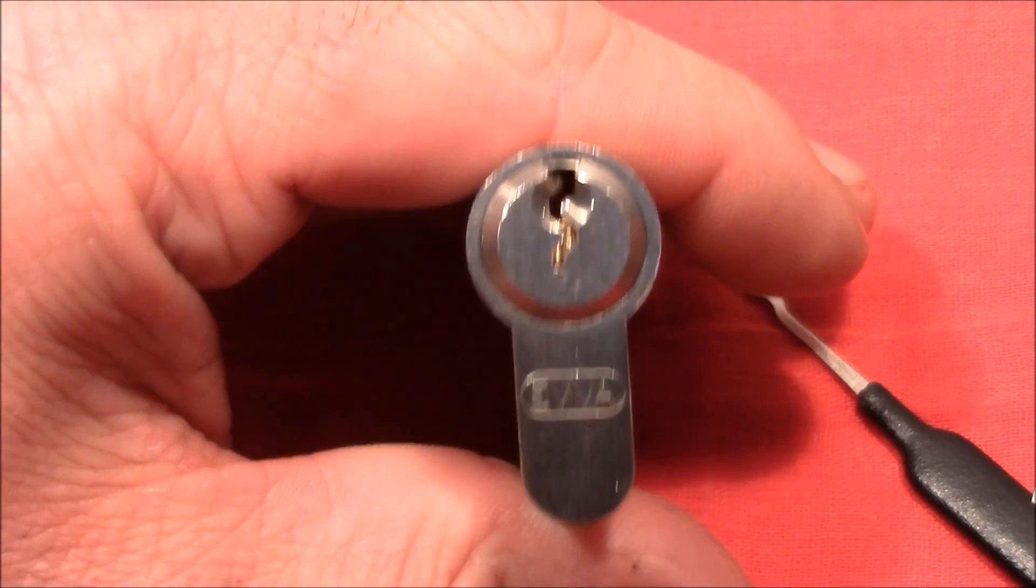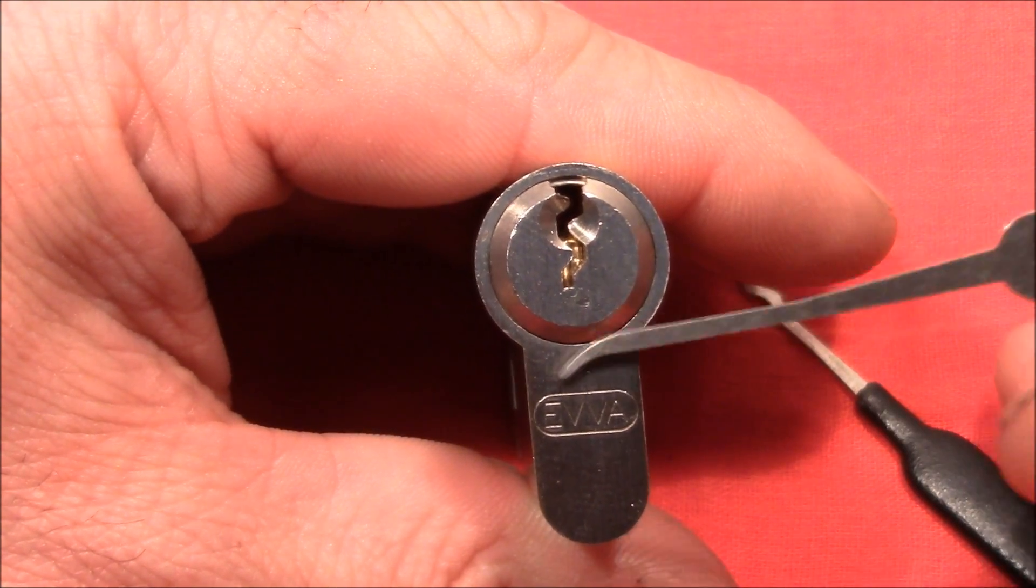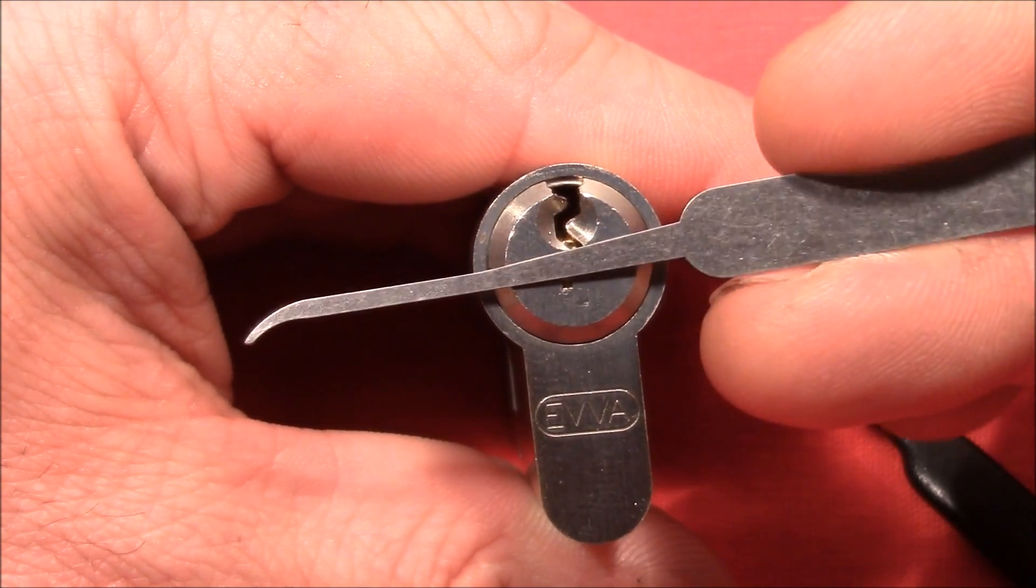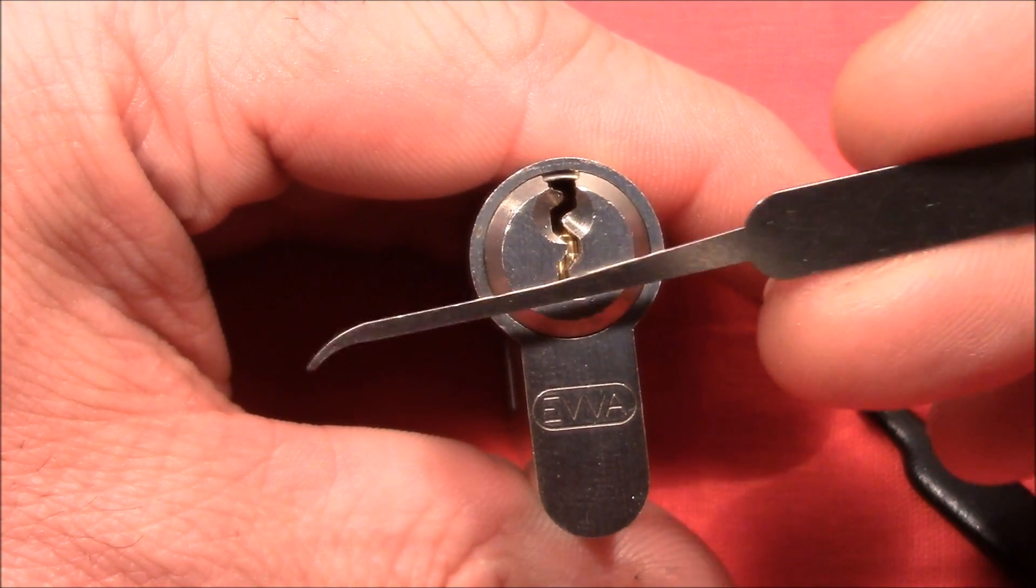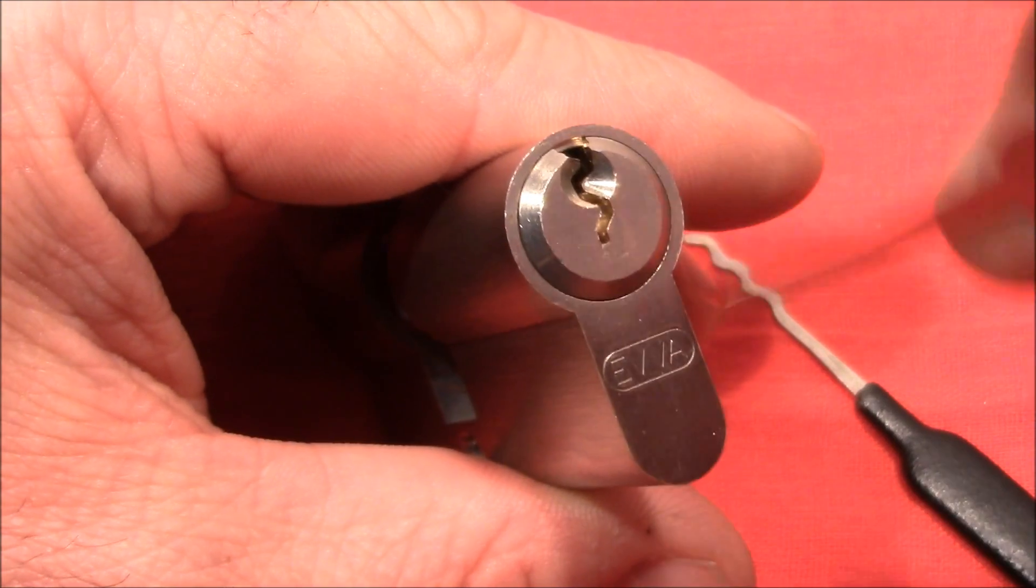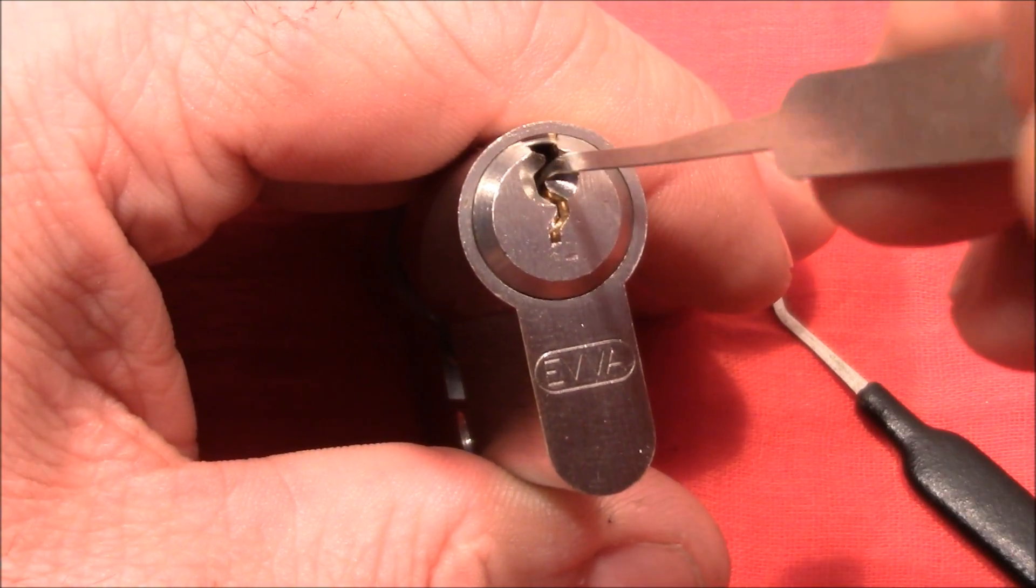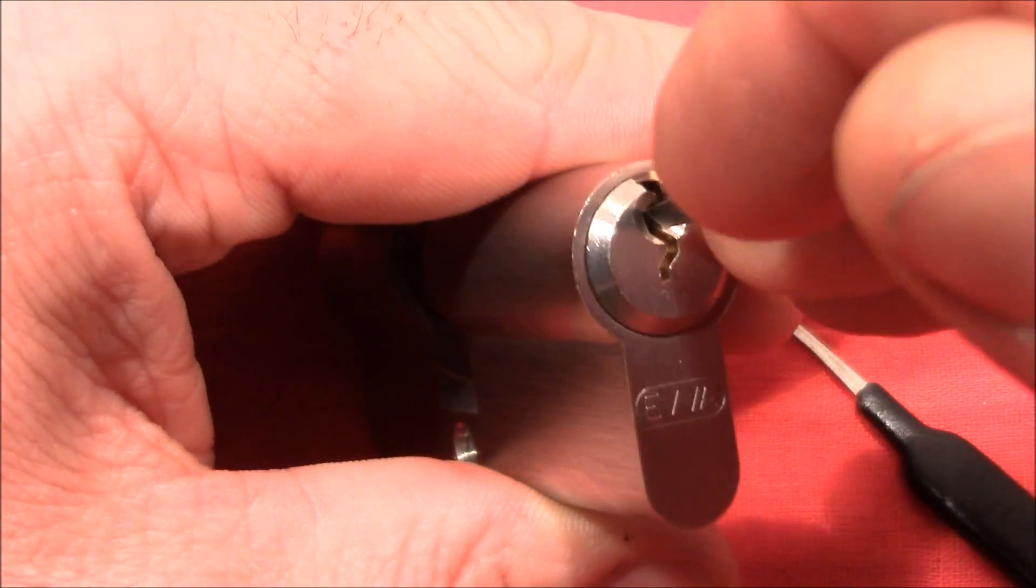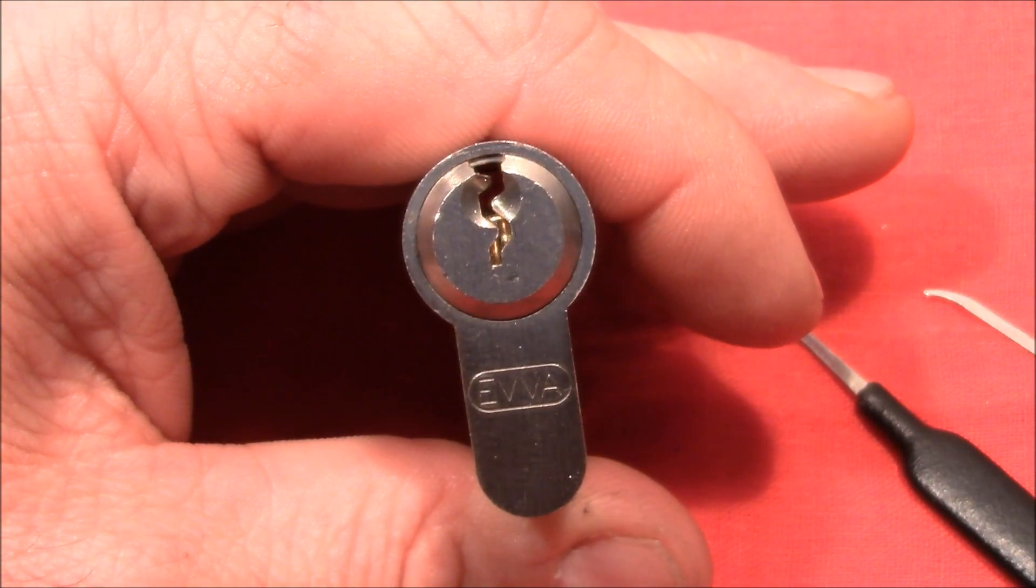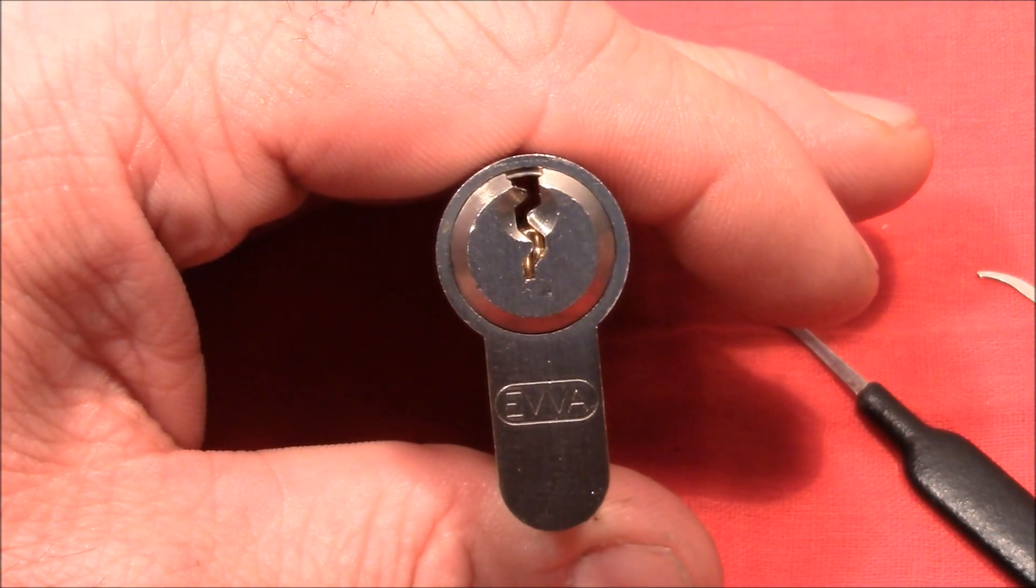So regarding the picking resistance, this lock provides a very good measure because of the very thin and curved keyway. But I have another Euro hook. It's from Sparrows. And it's 0.4 millimeters thick. And with that hook you can go in and also follow that first curve and access the pins very nicely. So I will use this hook and its brother, the deeper one, in order to pick it open.